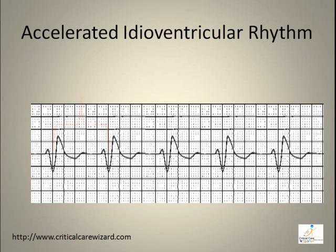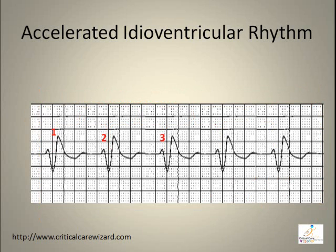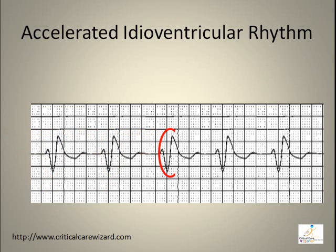In accelerated idioventricular rhythm, the rhythm is regular, with a rate between 40 to 100 beats per minute, a missing P wave, and a QRS duration of more than 0.10 seconds.